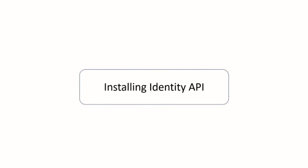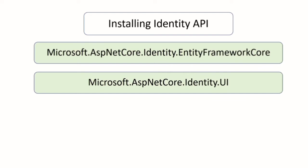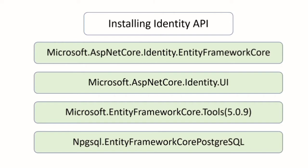So let's start with installing the Identity API. We need to install the following packages: Microsoft ASP.NET Core Identity Entity Framework Core, Microsoft ASP.NET Core Identity UI, the Entity Framework Core Tools — we need this one to generate the Entity Framework Core migrations.